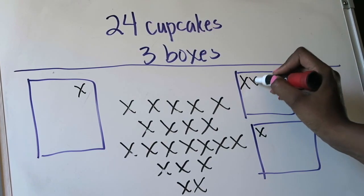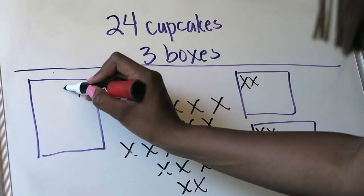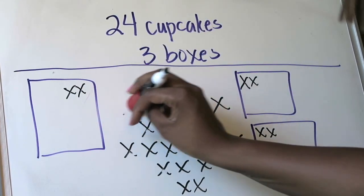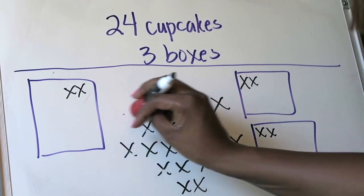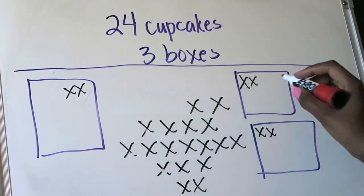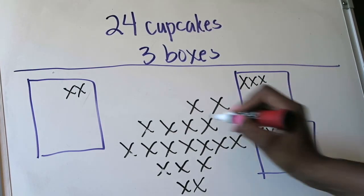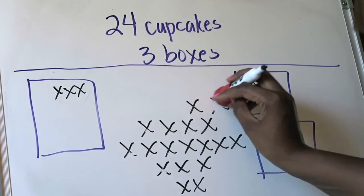I'm going to do the same thing. One, two, three. Erase another three to represent the three that I just put in the box. I still have cupcakes left so I'm going to keep going. One, two, three. Erase another three.